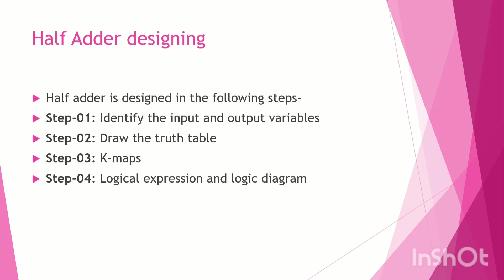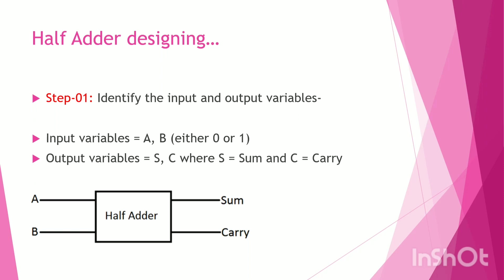For Half-Adder design, we have four steps. The first step is to define the input and output variables. The input variables are A and B, and the output variables are Sum and Carry (C). From the Half-Adder block, we then proceed to the next design steps.